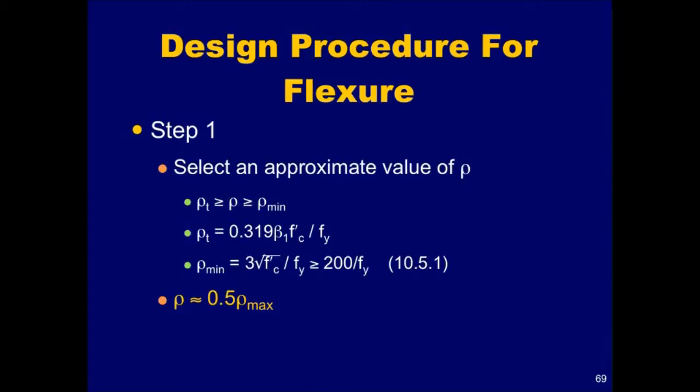Prudent choice of the reinforcement ratio can also minimize deflection problems. Flexural members will usually be of sufficient size so that deflections will be within acceptable limits when the tension reinforcement ratio does not exceed approximately one half of the maximum value permitted based on a net tensile strain of 0.004.